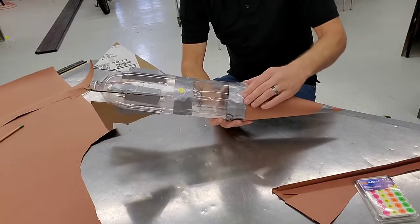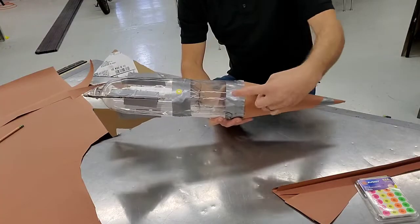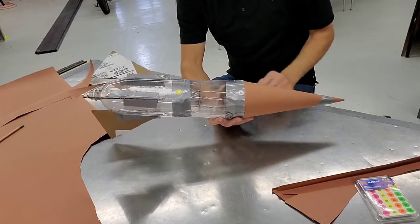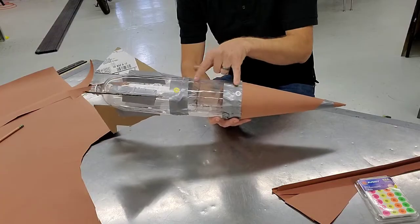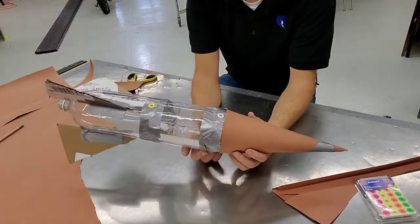We mark the center of pressure with the colored one and the center of gravity is marked with just the plain white one. One of our requirements was these would be at least two inches away. I could measure that, but I think they're closer to six inches, which makes me think this will be a super stable rocket.